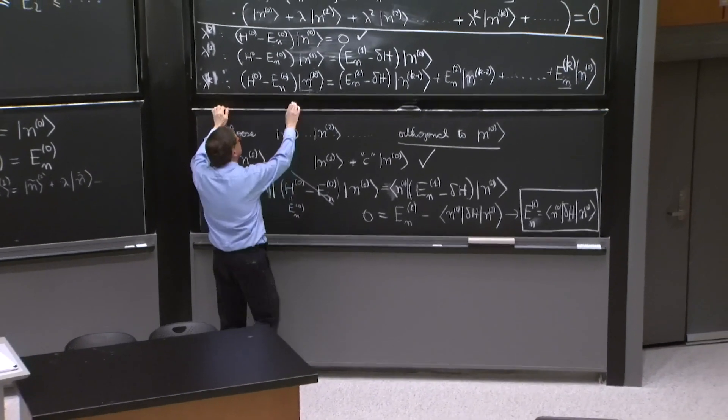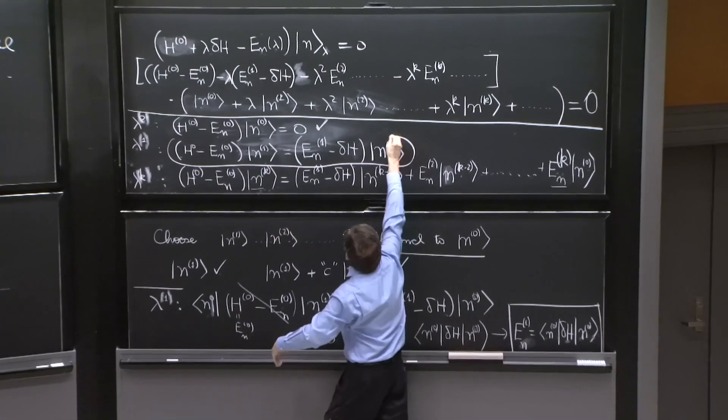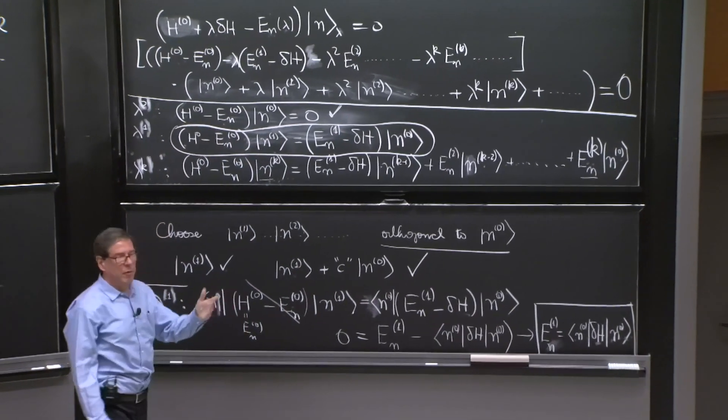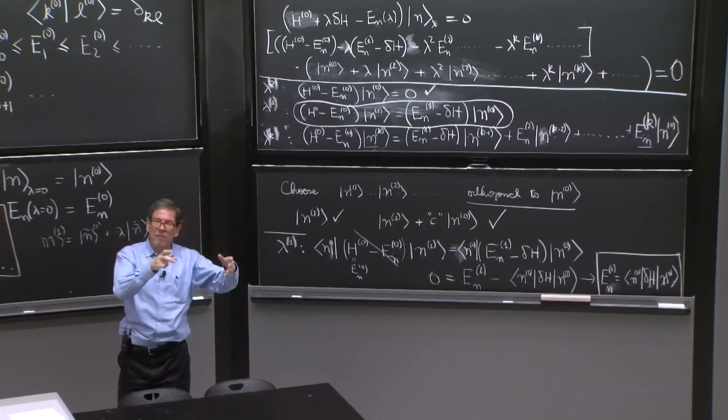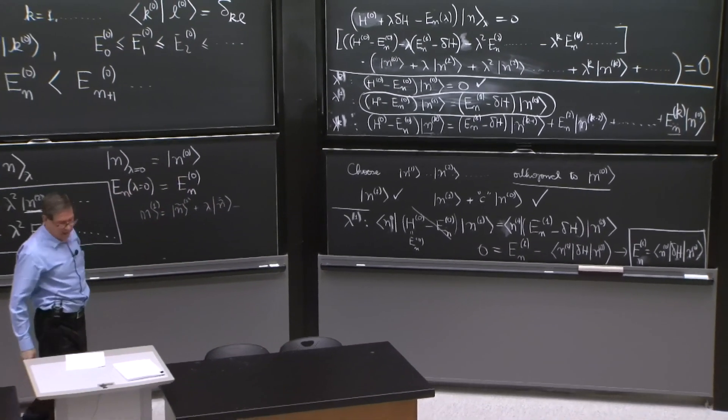You have an equation like this, and you want to solve it. It's a vector equation—operator on a vector equals number on a vector, or operator on a vector.